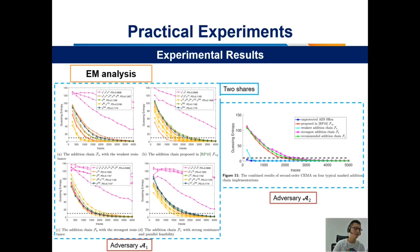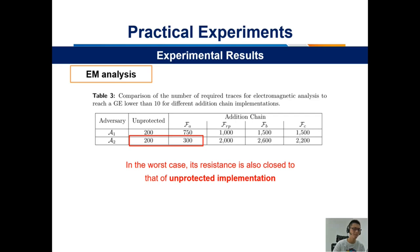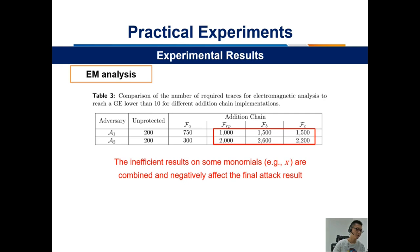Here are the results for EM analysis. Our main results are summarized in a table. In the worst case, the resistance is also close to that of an unprotected AES implementation. Besides, we find that attacks on the other three addition chains become less efficient for Adversary 2, because inefficient results on some monomials such as X and X² are combined and negatively affect the final attack results.